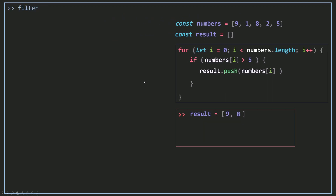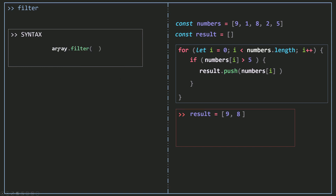Now let's see how we can filter using the filter method. For the syntax, you call filter on your array — in our case, numbers is the array — and you pass in a function. This function does the same test as before, checking whether a number is greater than 5. The function returns true for some numbers, and those numbers are saved in a new array. Because we're passing a function to another function — and filter is just another function — this is called a callback function.